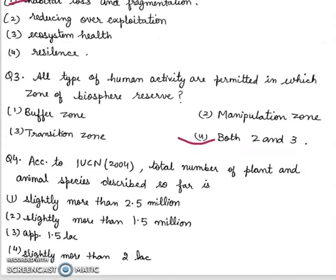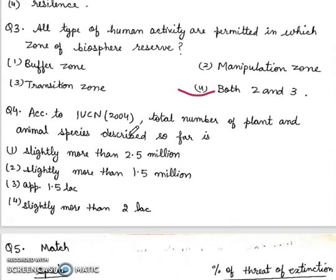Question 4: According to IUCN, total number of plant and animal species described so far is: First, slightly more than 2.5 million. Second, slightly more than 1.5 million. Third, approximately 1.5 lakh. Fourth, slightly more than 2 lakh. Right answer will be second, slightly more than 1.5 million.